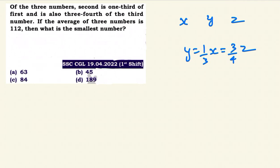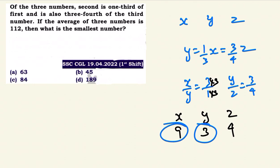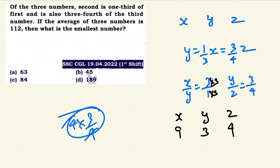The second number y: x to y ratio is 3 to 1. y to z ratio is 3 to 4. So x:y is 3:1 and y:z is 3:4. Second is one third of the first — so x:y = 3:1. Second is also three fourths of the third — so y:z = 3:4. Third number is 4, second is 3, first is 9. So the ratio x:y:z = 9:3:4.